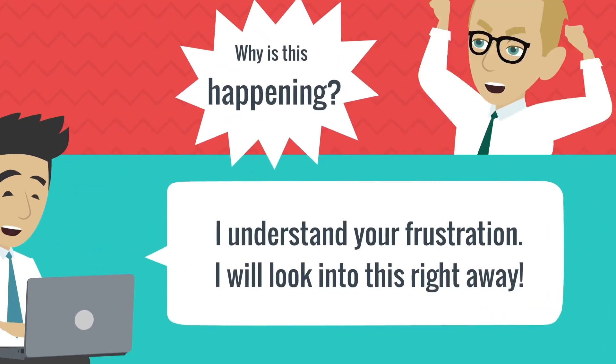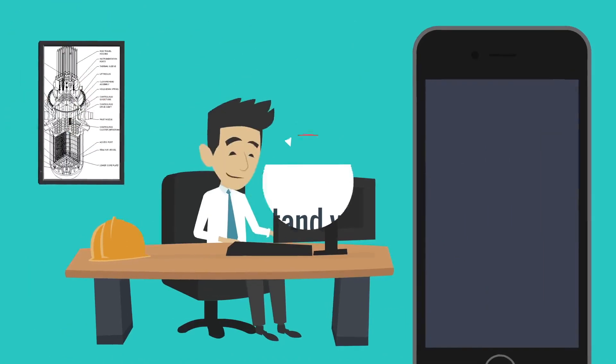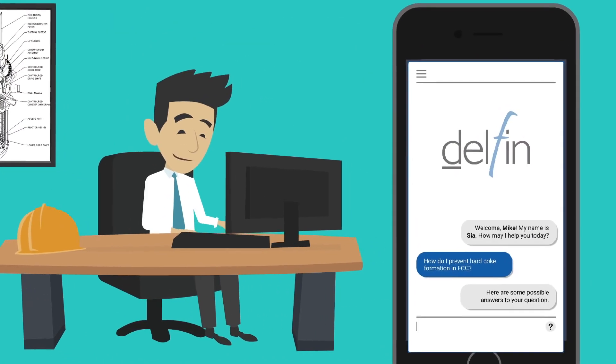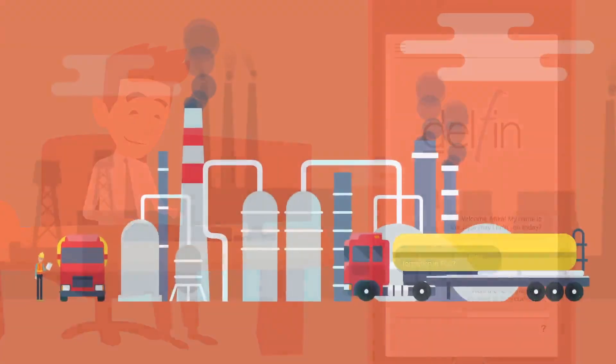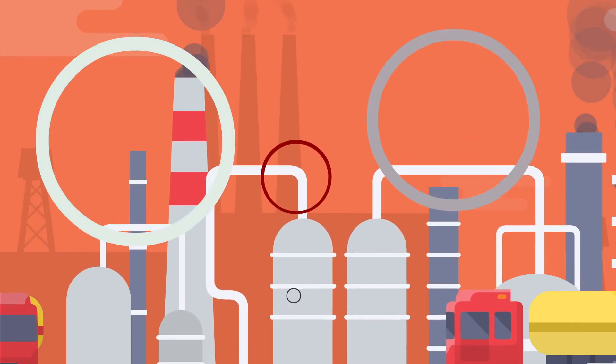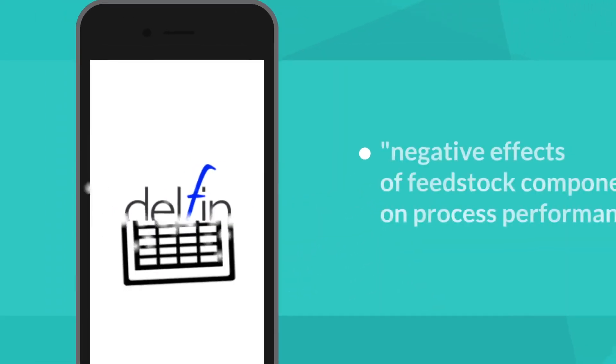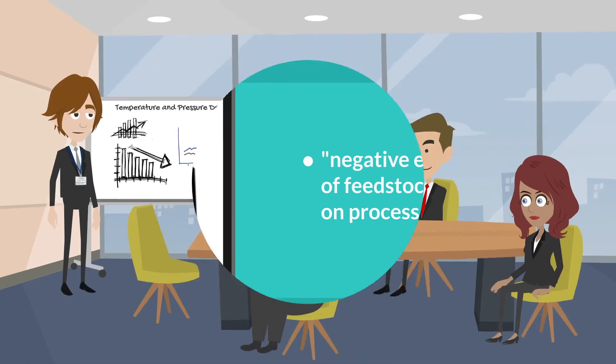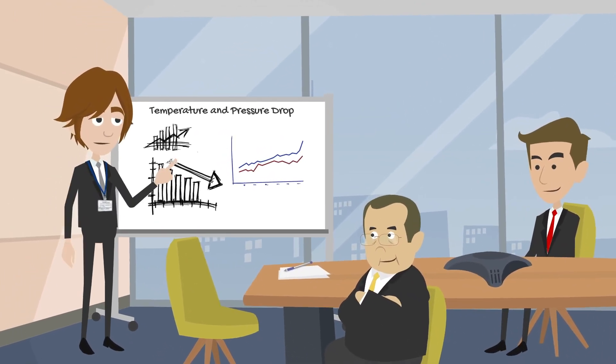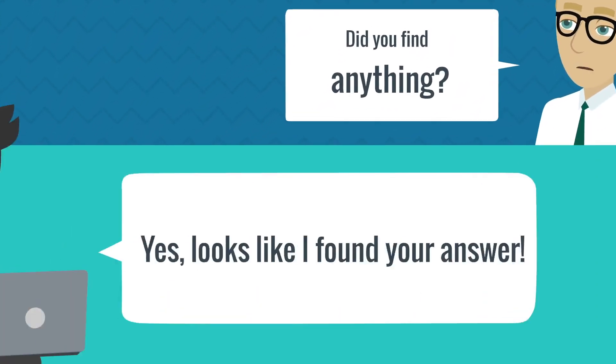Now, whenever a customer has an issue, Mike uses SIA to do his research. SIA helps Mike identify other process changes that could have possibly caused the issue, whether any of these changes has been reported before, what the experts in his company had reported about this issue, and how the issue was resolved.